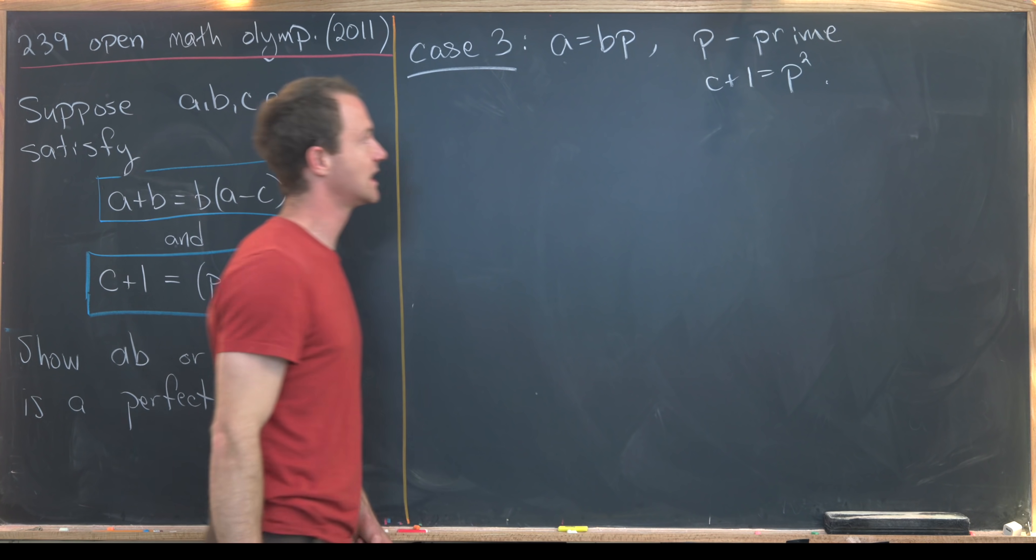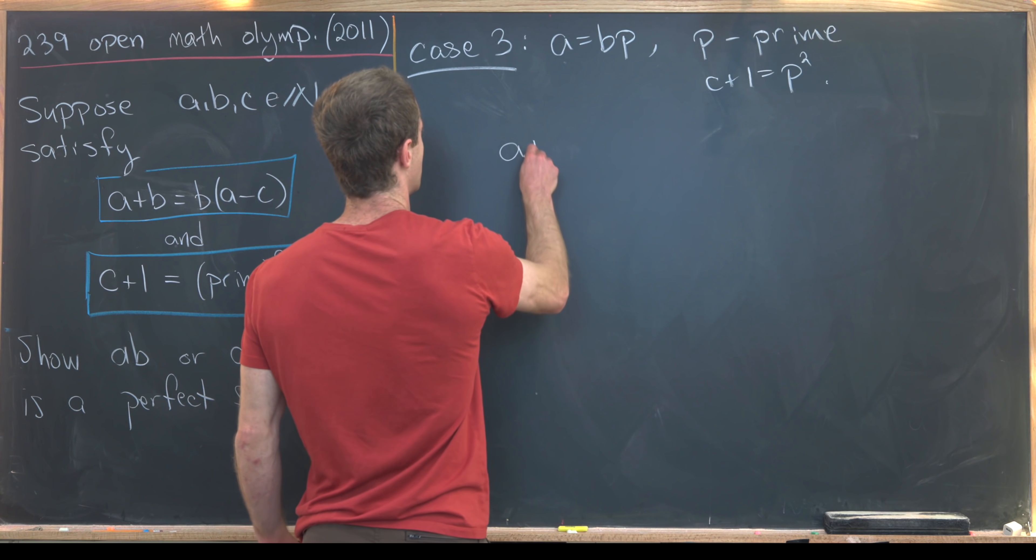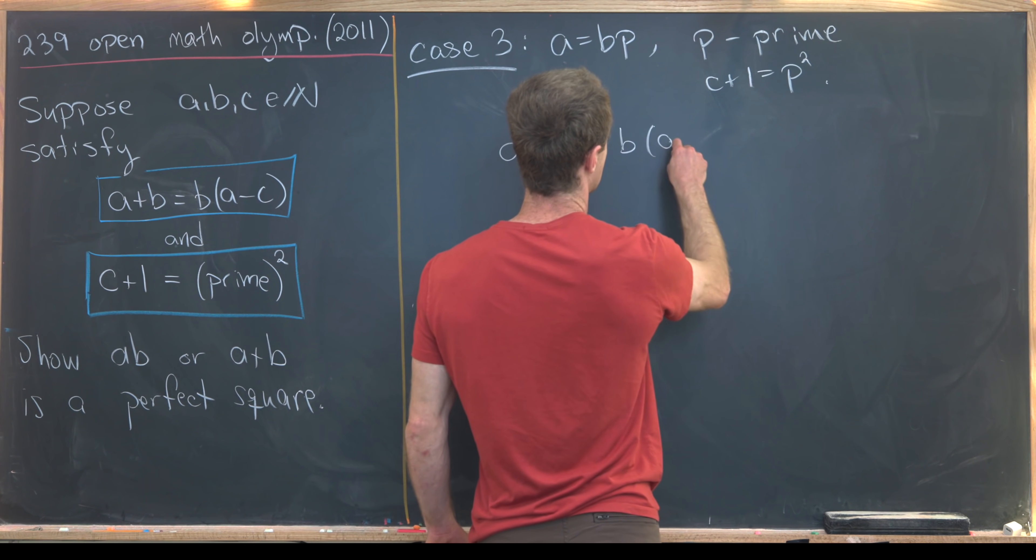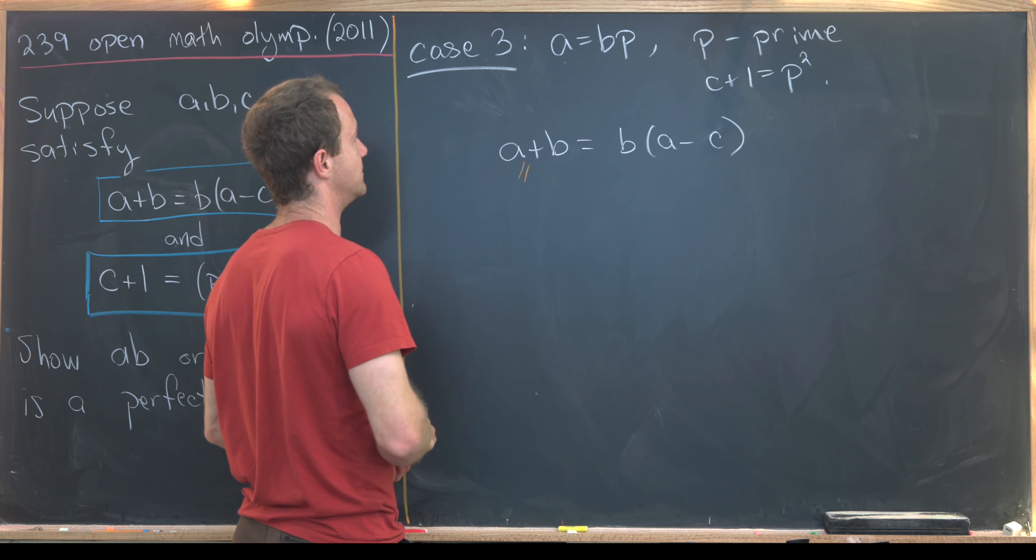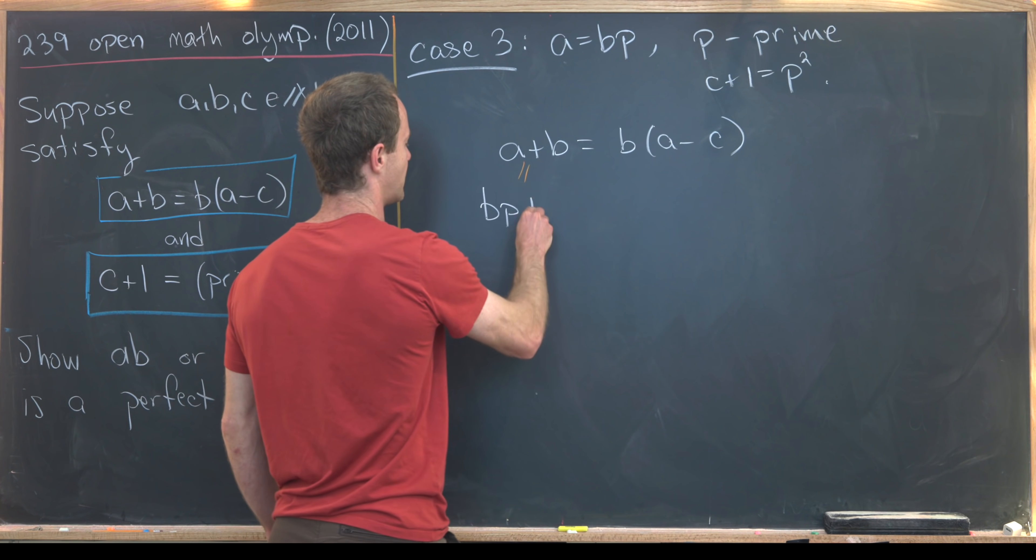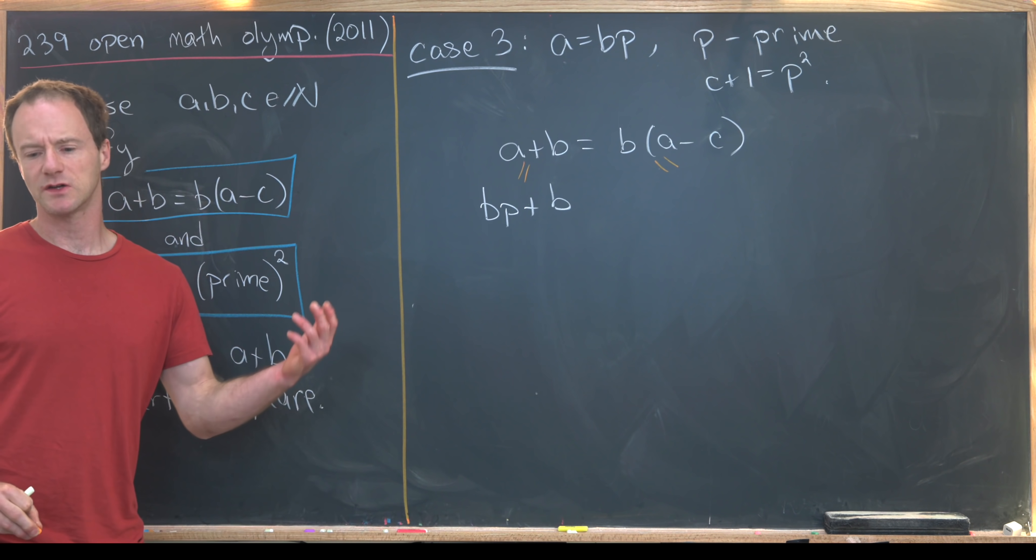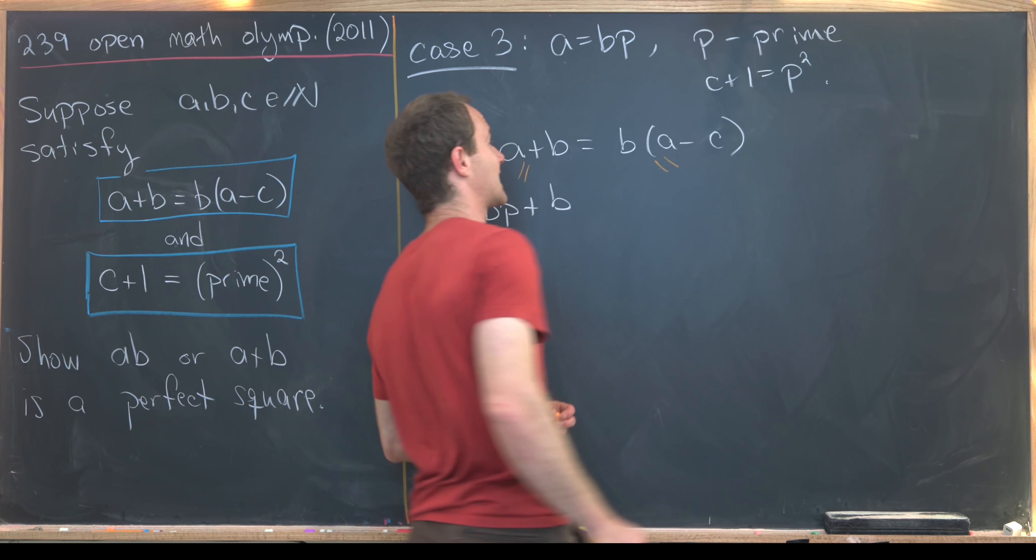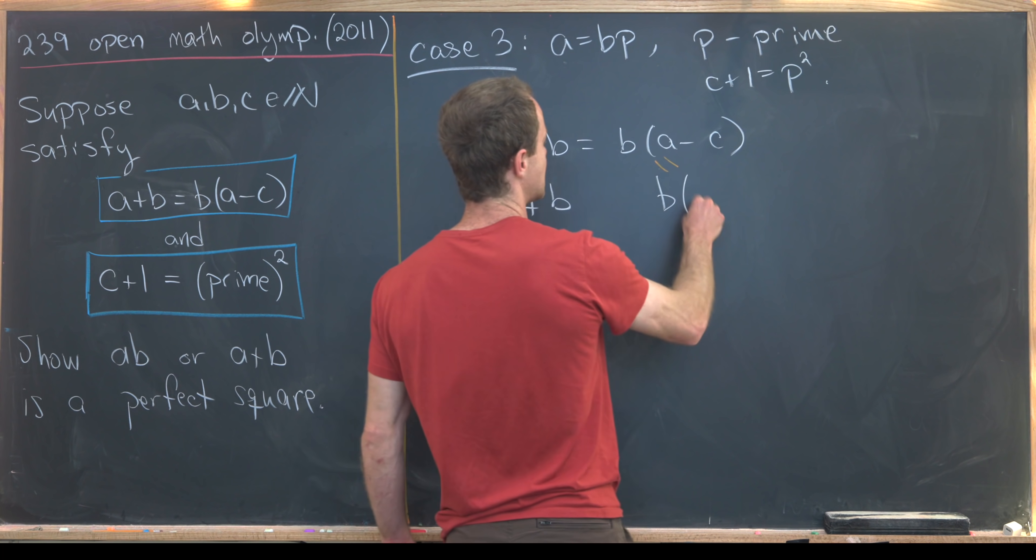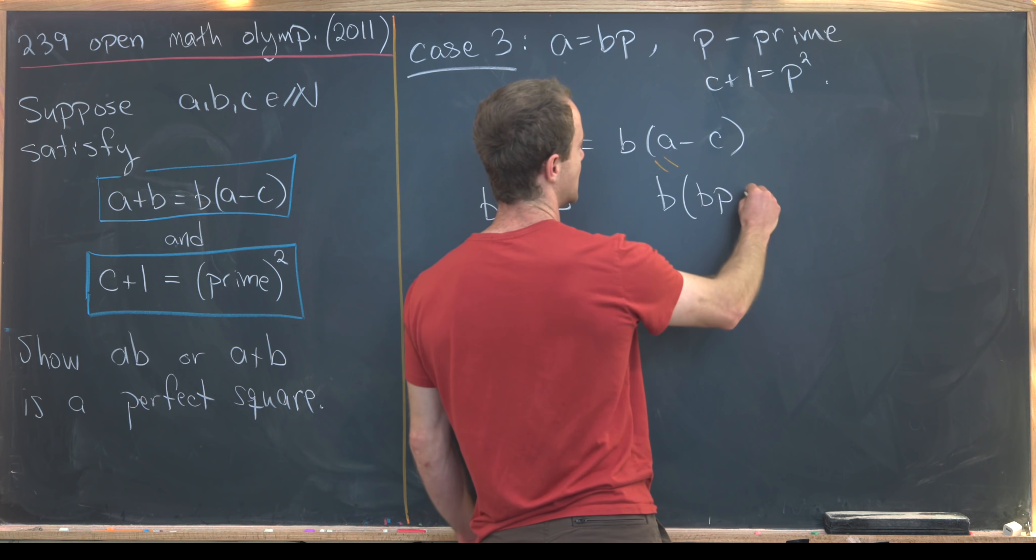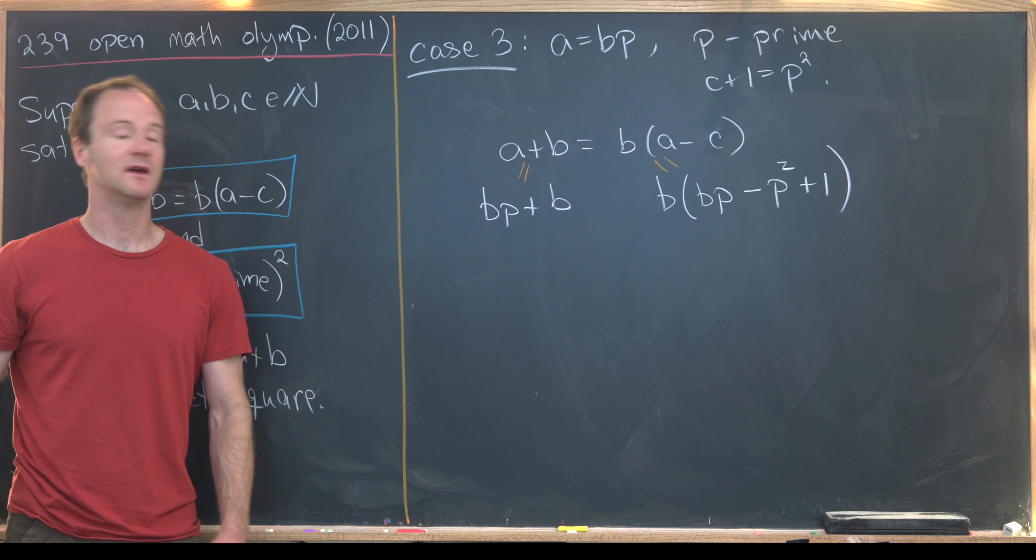Okay, so now let's see where we can go from here. I'm going to take this first equation and rewrite it with this a = bp and then see what happens. So I've got a+b = b(a-c). That's just rewriting that first equation. Now I'll take this a+b and rewrite it as bp+b. And then I'll take this b(a-c) and also rewrite it using these facts along with this fact that c will be p²-1. So let's see what that'll give us. We'll have b times, well a is bp minus, well c is p²-1. So it'll be minus p² plus one after distributing that minus sign through.